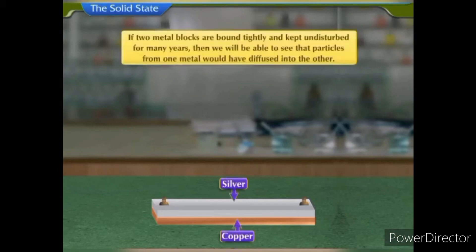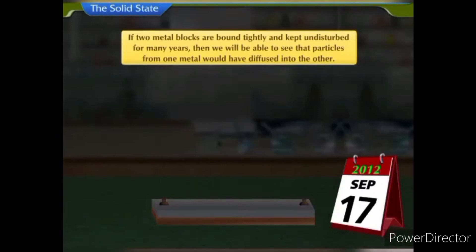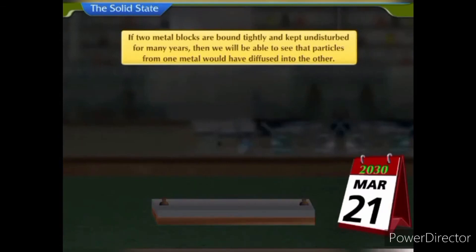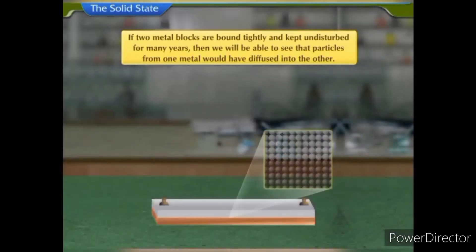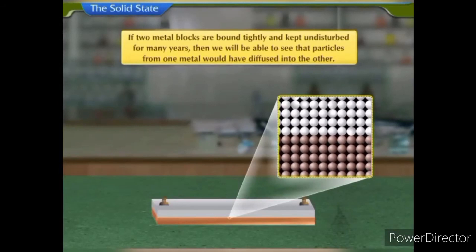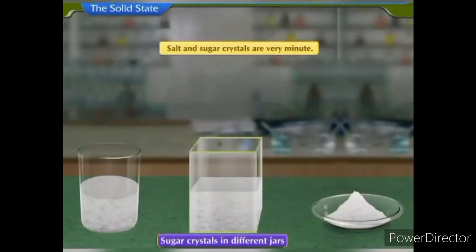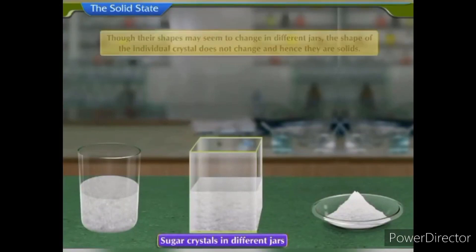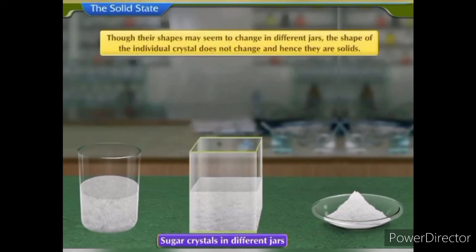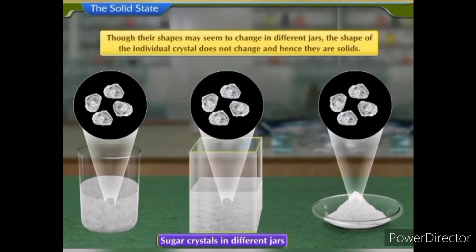For instance, if two metal blocks are bound tightly and kept undisturbed for many years, then we will be able to see that particles from one metal would have diffused into the other. Salt and sugar crystals are very minute. Though their shapes may seem to change in different jars, the shape of the individual crystal does not change, and hence they are solids.